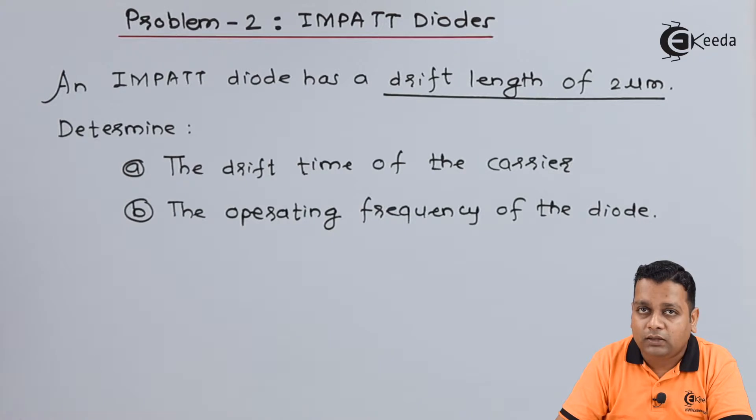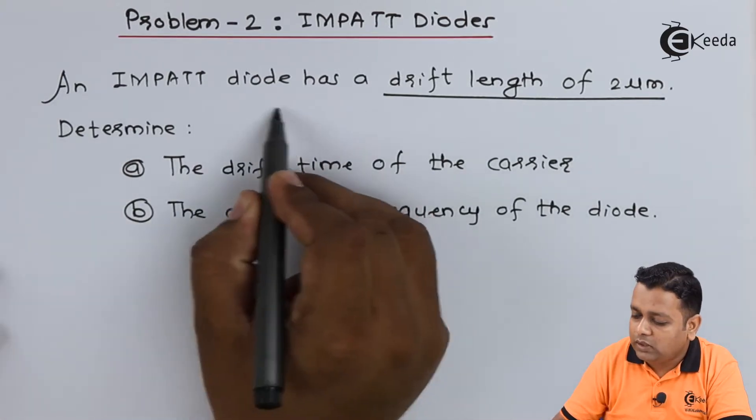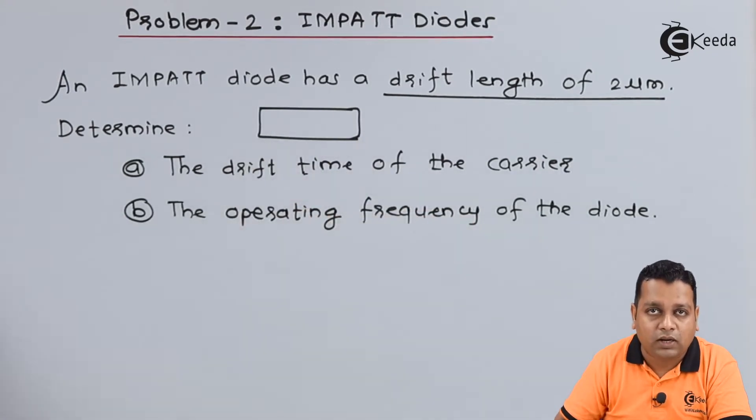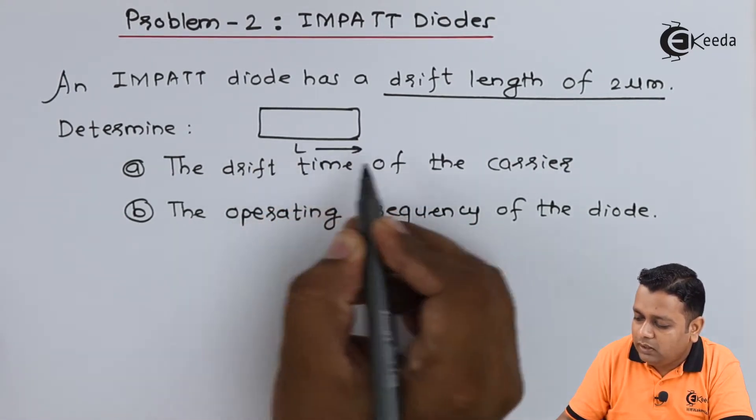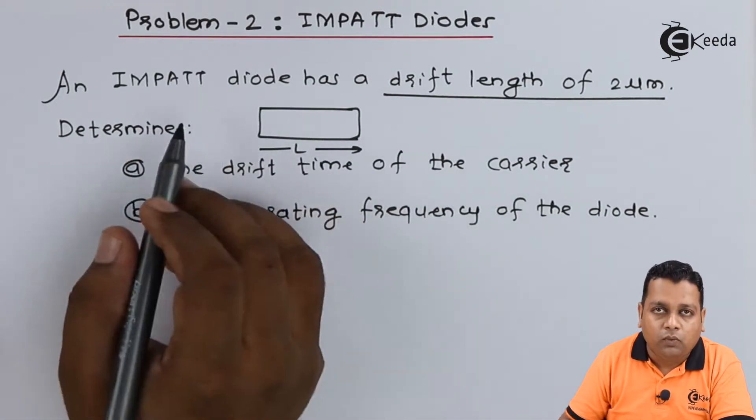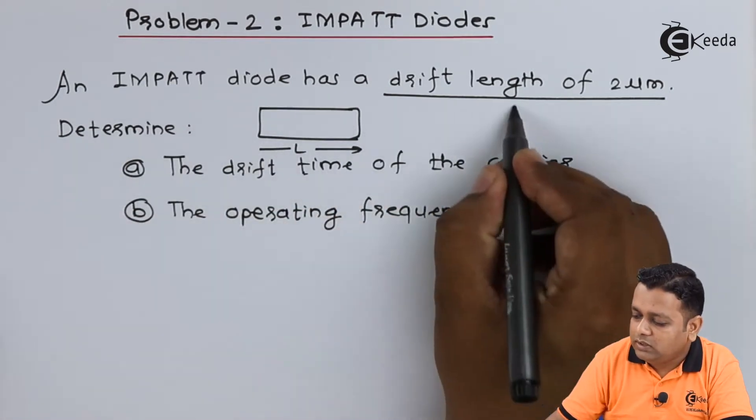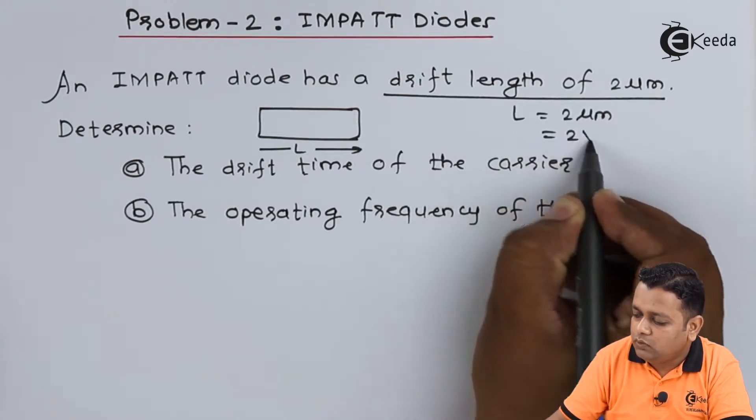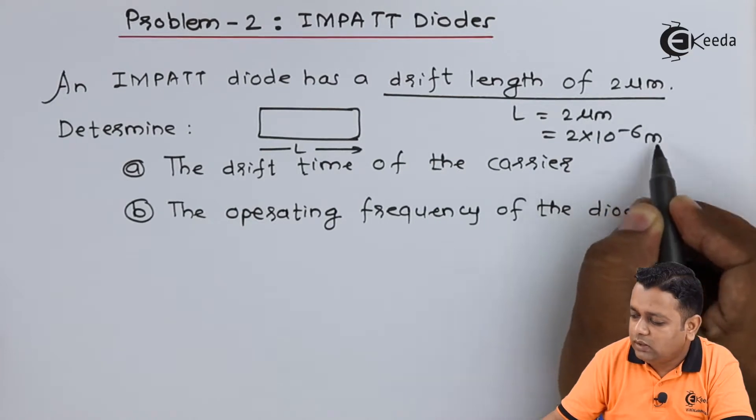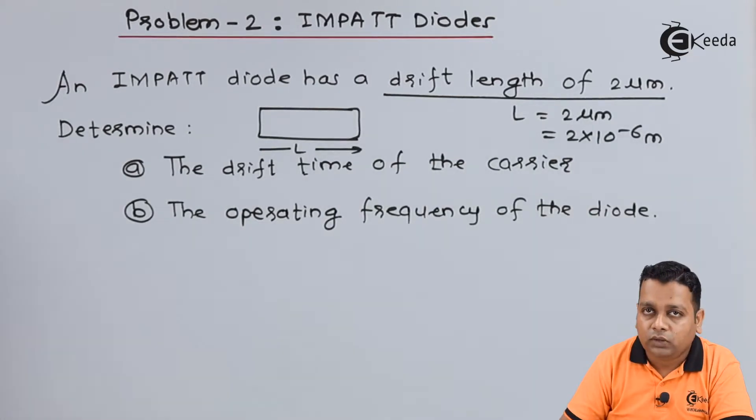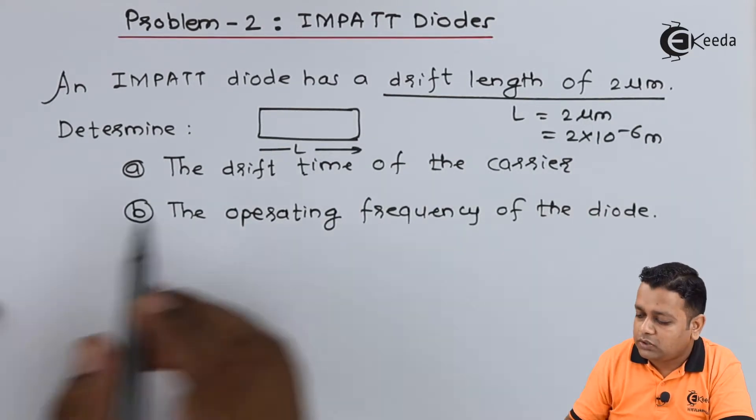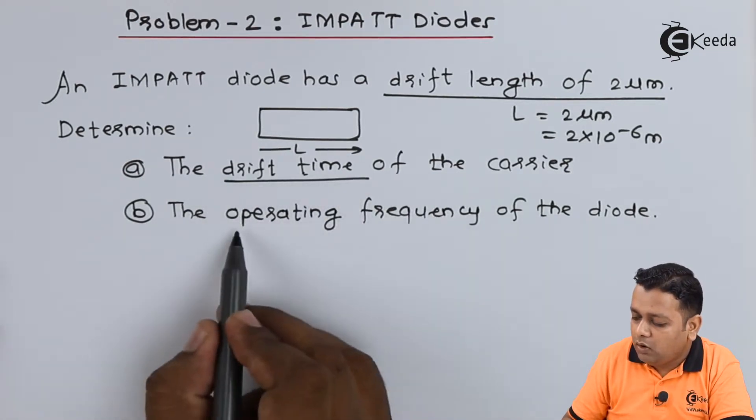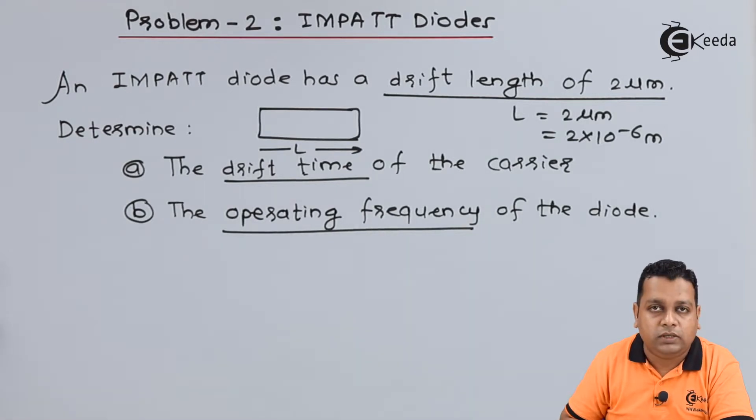Now the drift length for the IMPATT Diode has a bulk representing the diode body with the length capital L from one terminal to another terminal. So here we can say that L is equal to 2 micrometers, which equals 2 into 10 raised to the power minus 6 meters. We have to make computation of drift time for the carrier in part A and the operating frequency in part B.